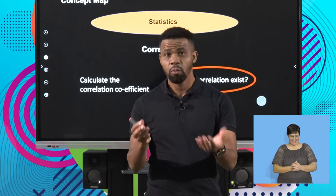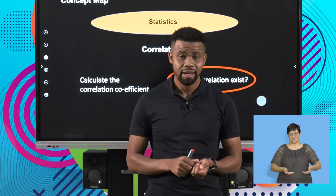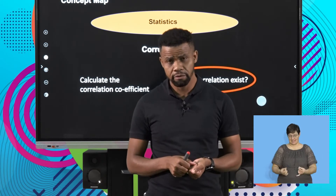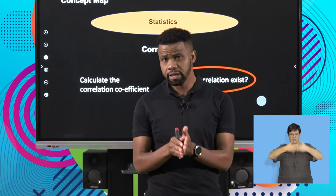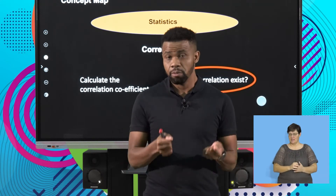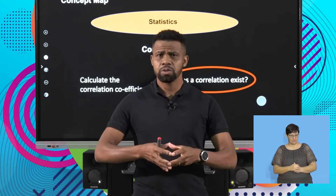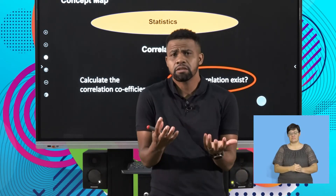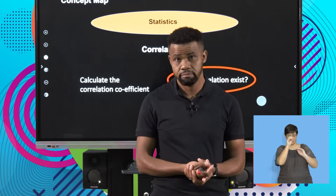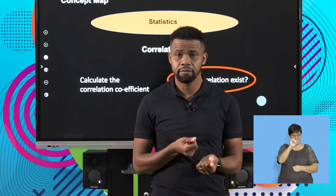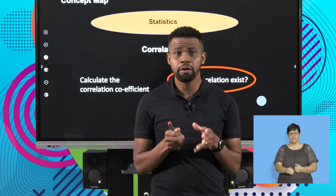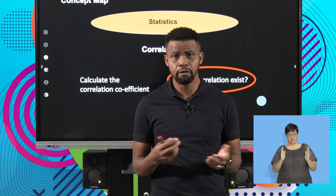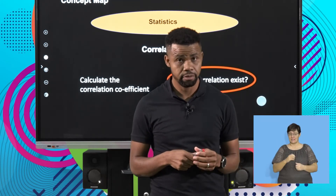Hello out there, welcome back once again. We're still on statistics and looking at calculations of correlations. Hope you're ready with your pen and paper. This part we're going to look at whether, given a scatterplot, does a correlation exist? How can we tell if correlation exists? We know that the correlation is between negative 1 and 1.